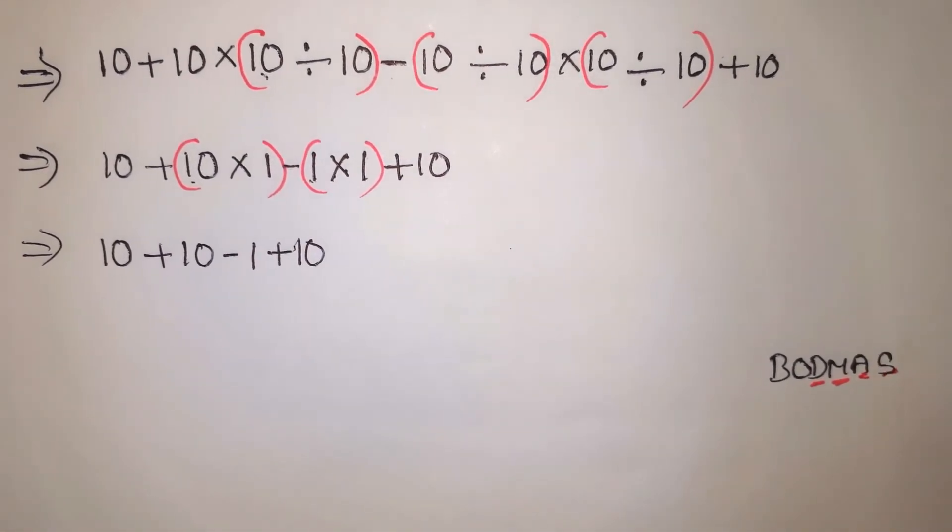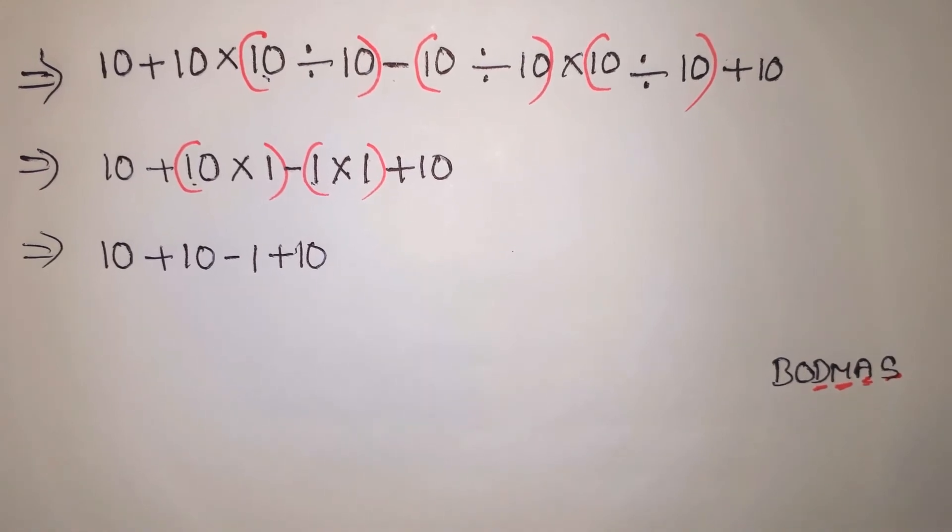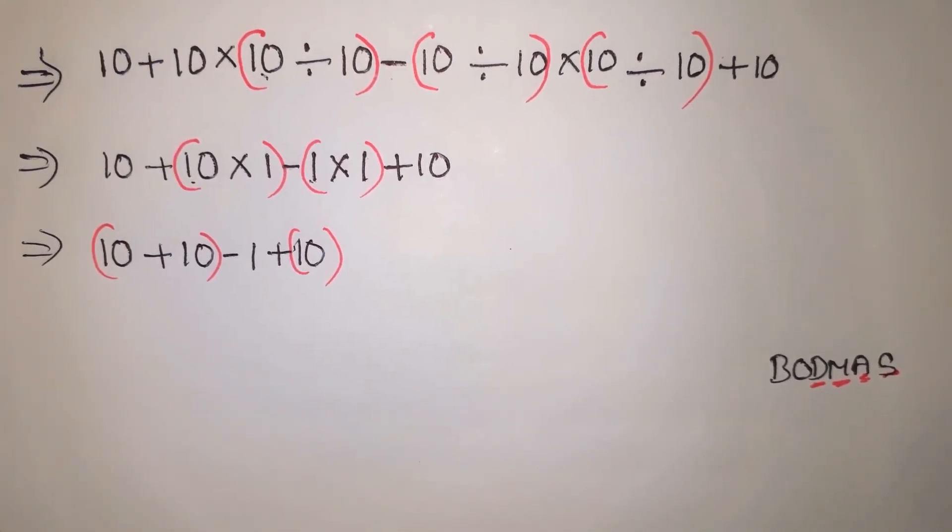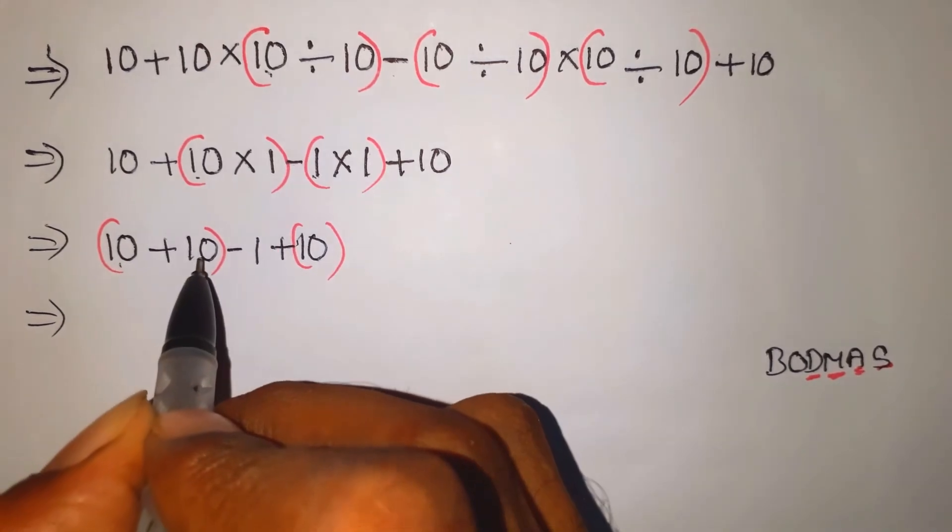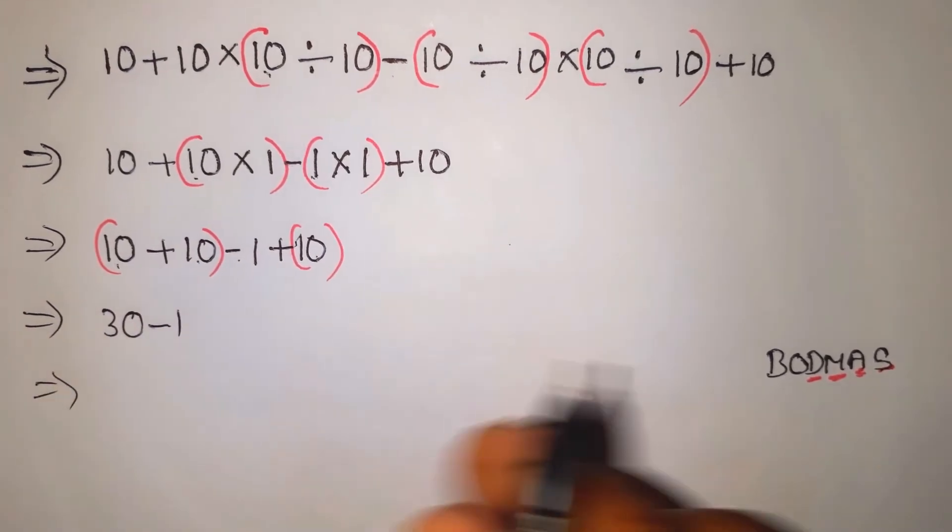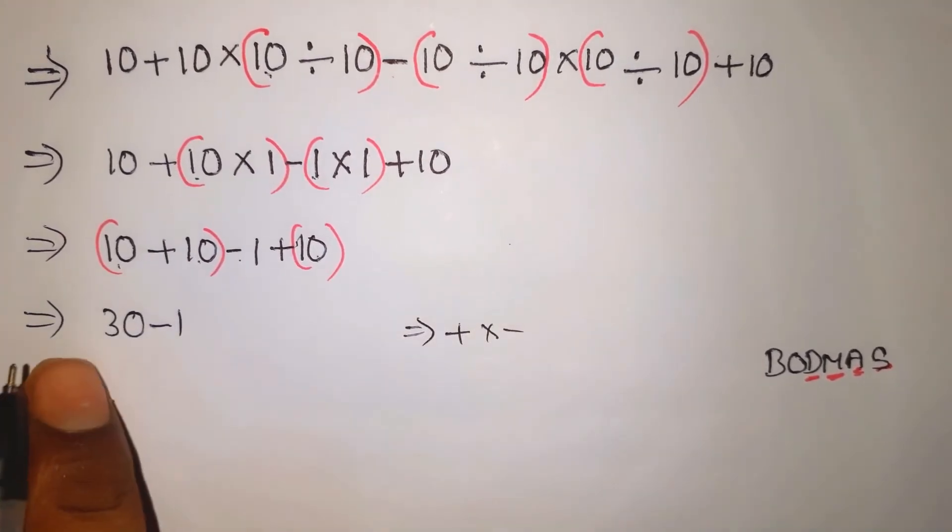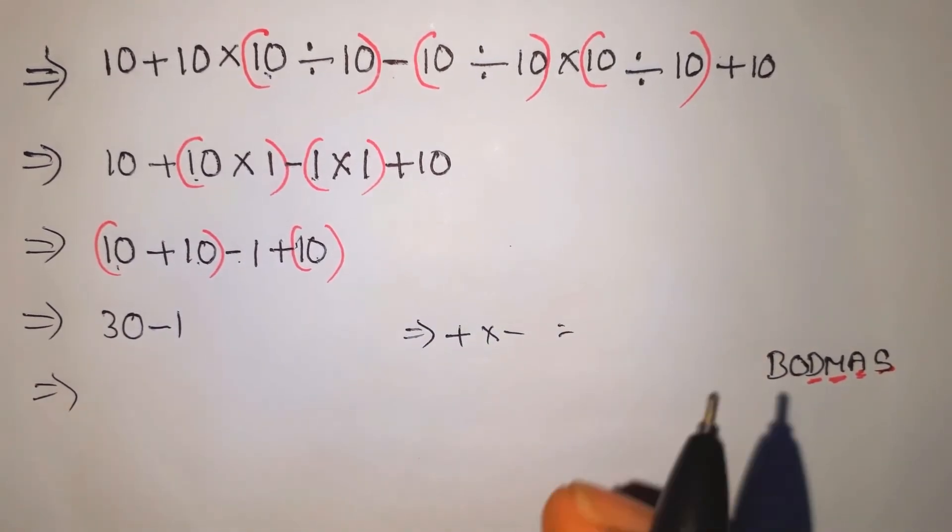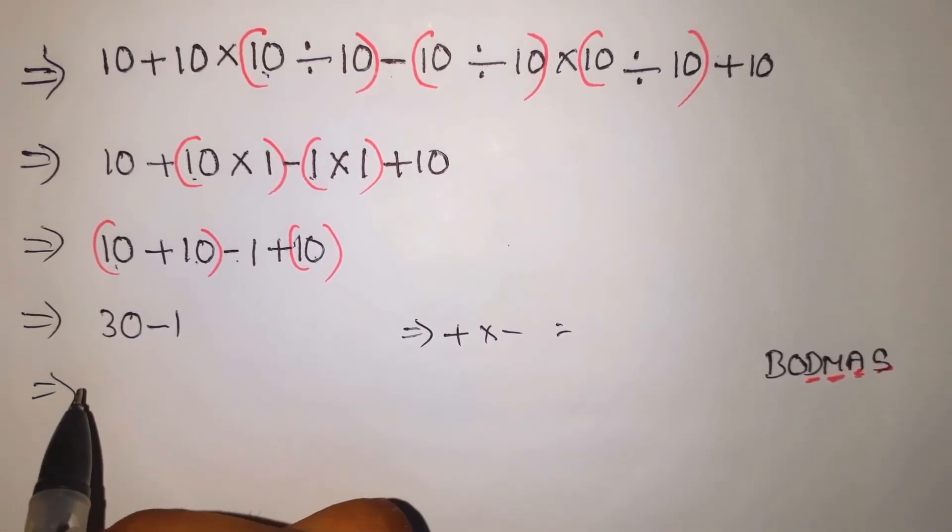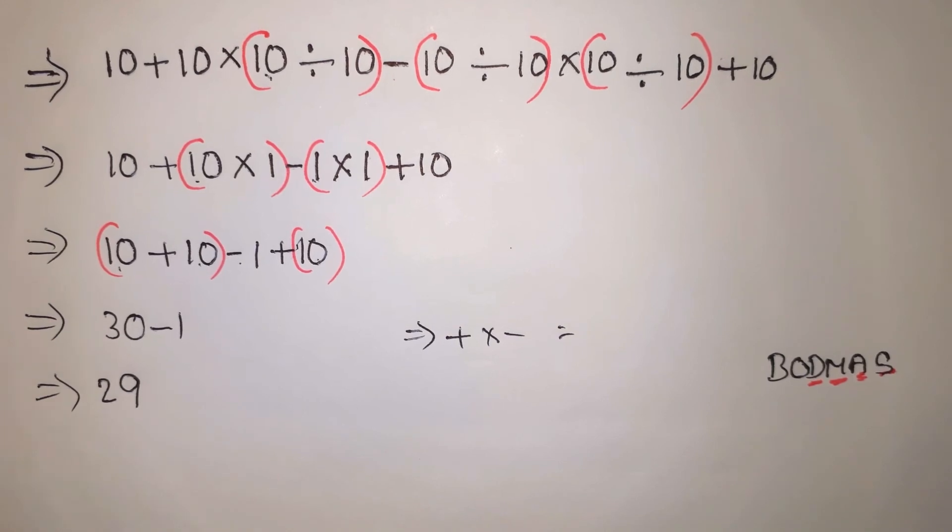Next is addition. 10 plus 10 equals 20, plus 10 equals 30. Finally, subtraction. Now we will choose this value. First, we start with the basic value: plus into minus equals minus. If you want to choose the value, there is a plus and minus symbol. What is the value? Plus 29. So we have the answer: 29.